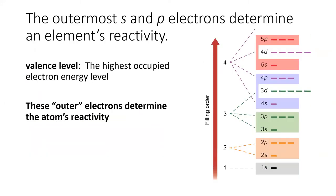In general, the outermost S and P electrons determine a chemical's reactivity. We give these electrons a special name, the valence electrons.